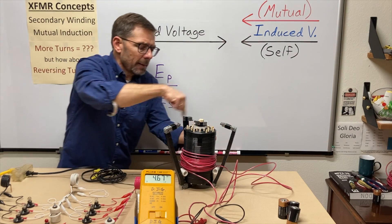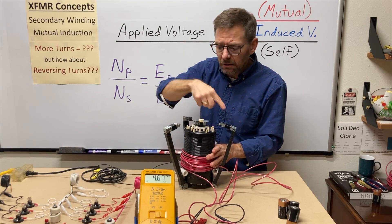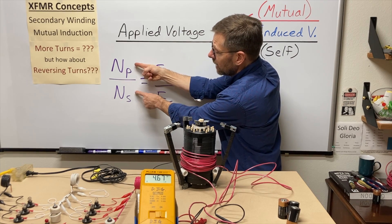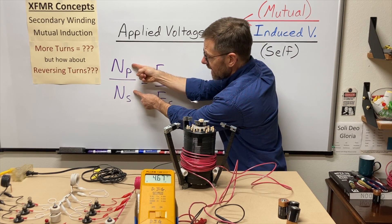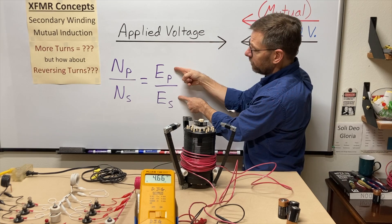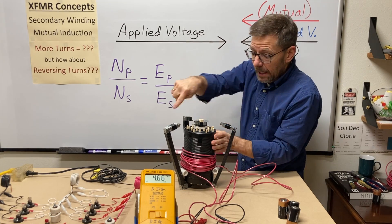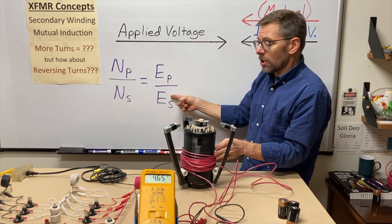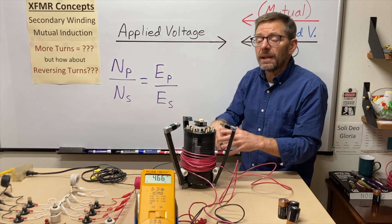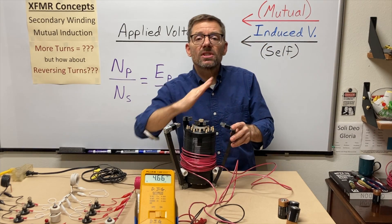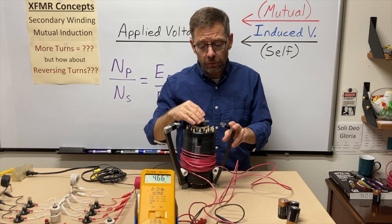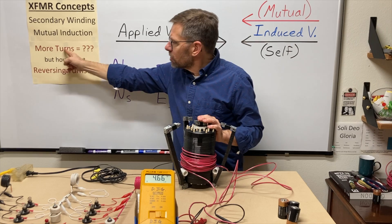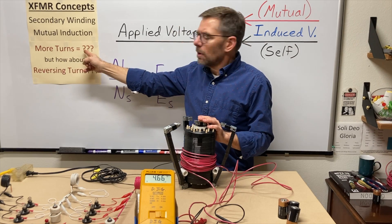If I kept putting more and more turns on the secondary until there were the same number as on the primary, those voltages would be equal. And if I kept going and had more turns on the secondary than the primary, then the voltage on the secondary would be higher — that would be a step-up transformer. So that answers this first question: more turns, more voltage.